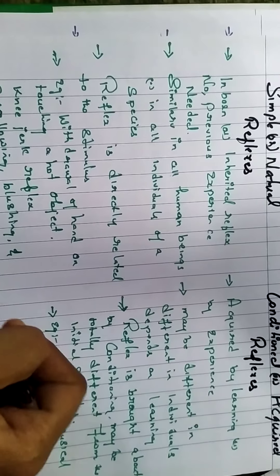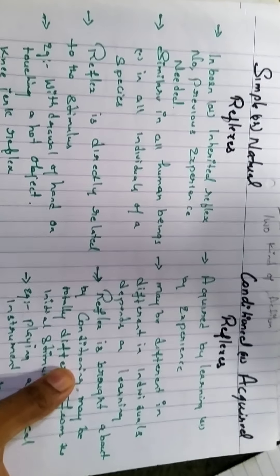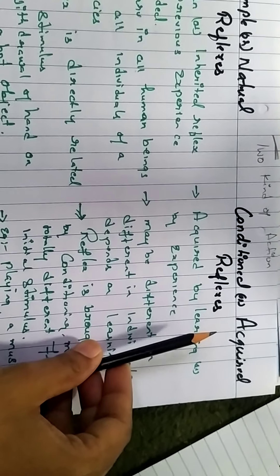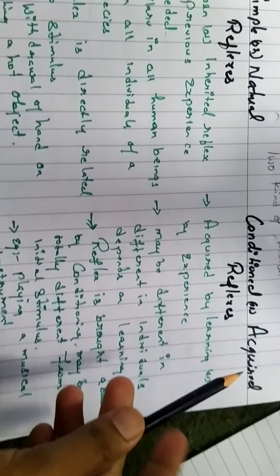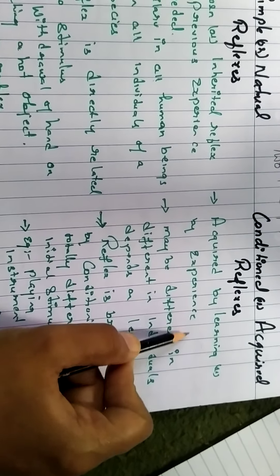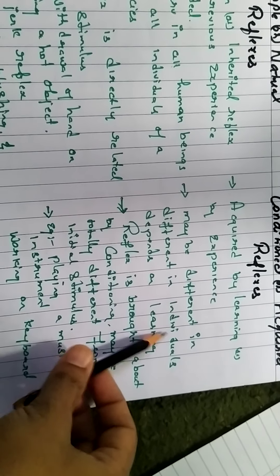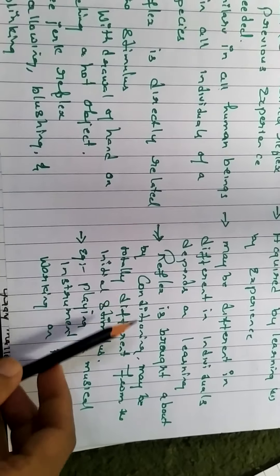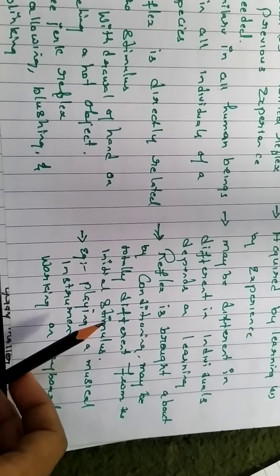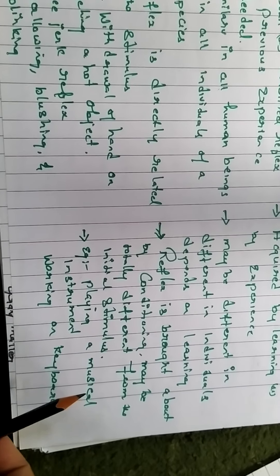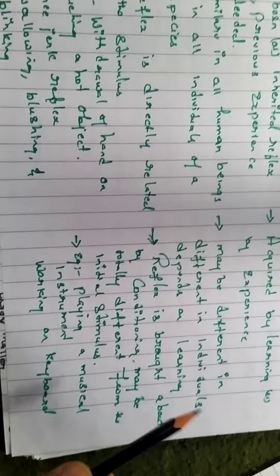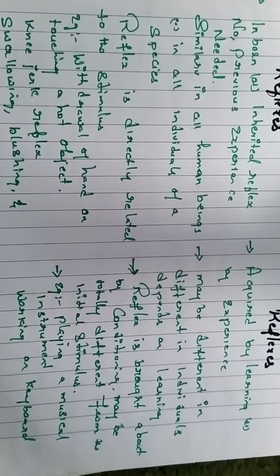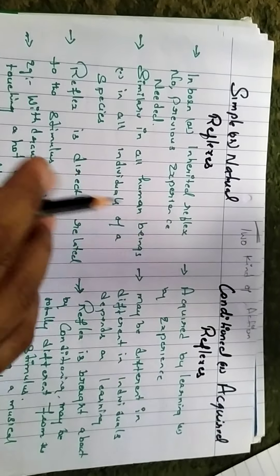All of these take place naturally without involving the cerebrum — without the brain knowing. The second type is the conditional, acquired, or voluntary reflex. These are acquired by learning or by experience, and may be different in different individuals, depending on their capacity for learning. These reflexes are brought about by conditioning and may be totally different from the initial stimulus. For example, playing a musical instrument or working on a keyboard — these are voluntary actions under the conscious control of the cerebrum.